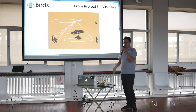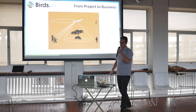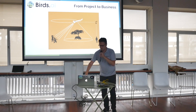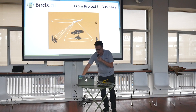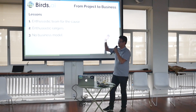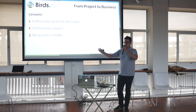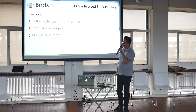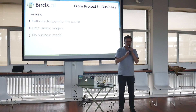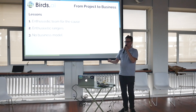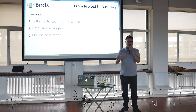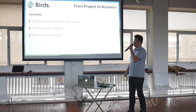But then we realized we were just working for the cause, helping the rangers — there was no business model. And we were just at the end of the project but we wanted to continue. Why is there no business model in anti-poaching? Because the money is on the wrong side — we'd have to sell to the poachers, and that's not a good idea.